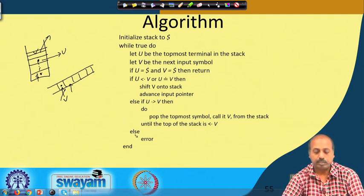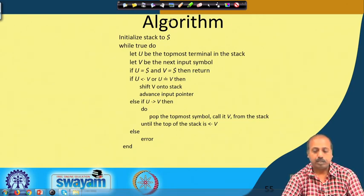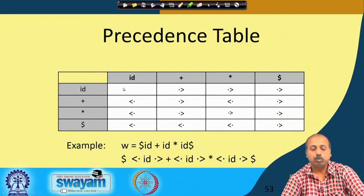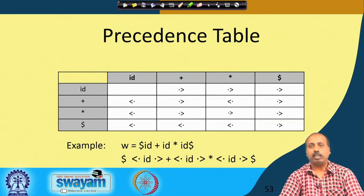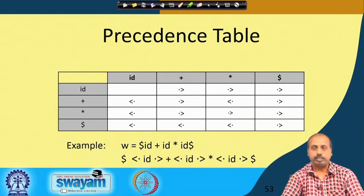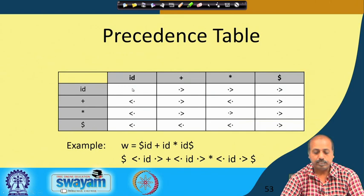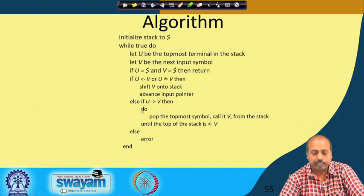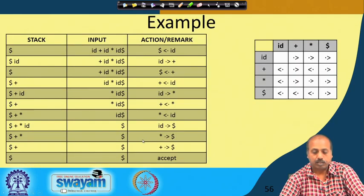If none of these apply, there is an error. Error occurs when some table entries are undefined. For example, in this table, id-to-id is not defined. Intuitively, if two identifiers come one after the other, that is meaningless because in an expression some operator must appear between two identifiers. If the operator is not there, there is an error. If there is no precedence relationship between U and V, that means there is an error.